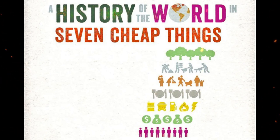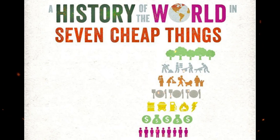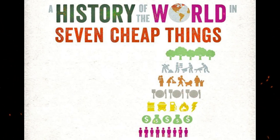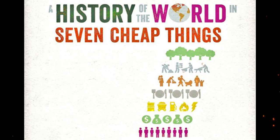The sugar colonies of the New World depended entirely on the cheap labor and lives of African slaves. The idea of cheap work had been in circulation in Europe since the Middle Ages, when the ruling classes responded to the Black Death by preventing peasants from asking for higher wages.